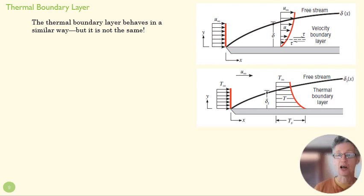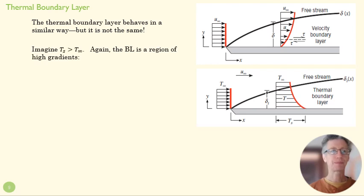So now let's talk about the thermal boundary layer because it behaves in a very similar way, but it's not exactly the same. So we have to be a little bit careful when we make our comparisons here. We're going to imagine in this case that, just because it's a little easier to think about, our surface is hot and our free stream velocity is a little cooler, kind of like the example we did earlier.